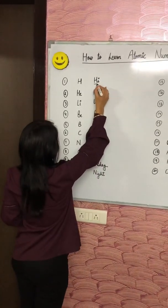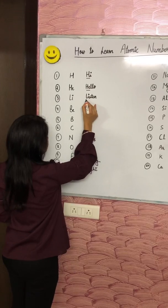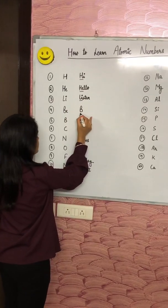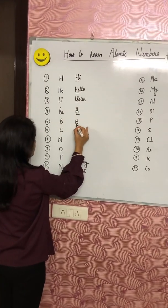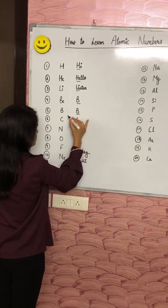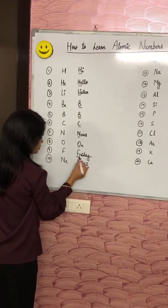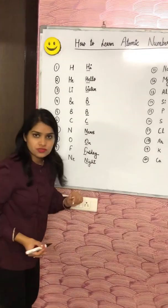So how can you relate this? H for hydrogen, He for helium, Li for lithium, Be for beryllium. That is, you can just learn it, BBC News. So B for beryllium, boron, carbon, nitrogen, oxygen, fluorine, and that is for neon.